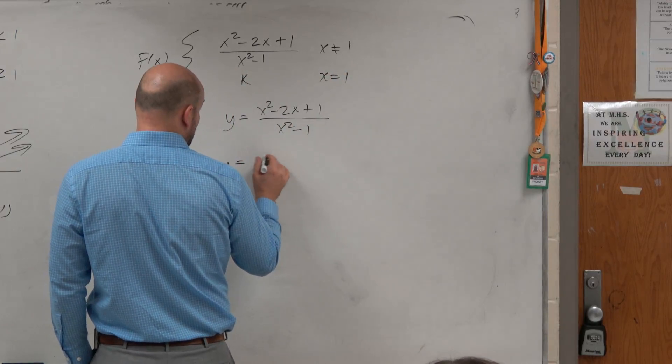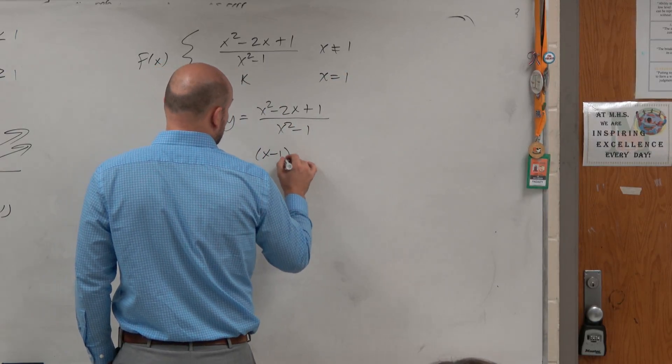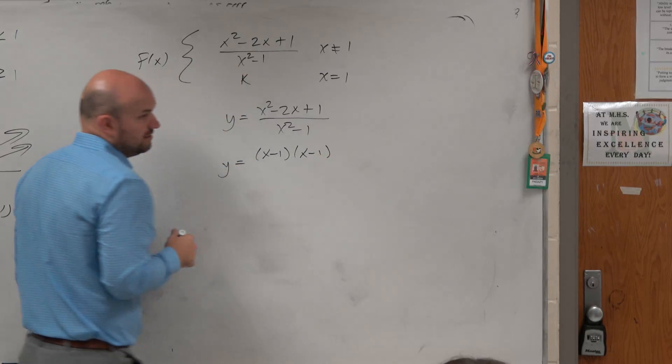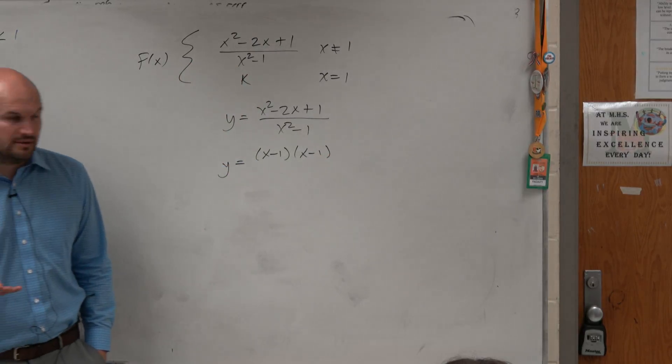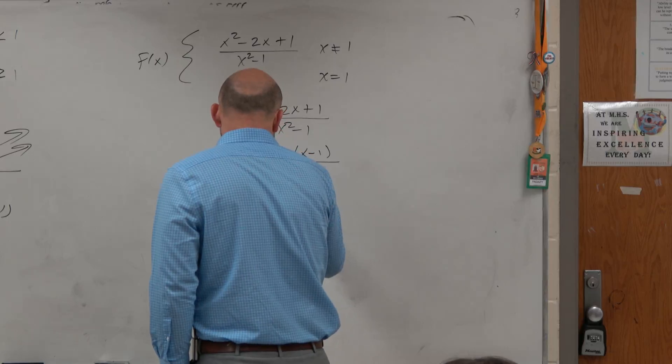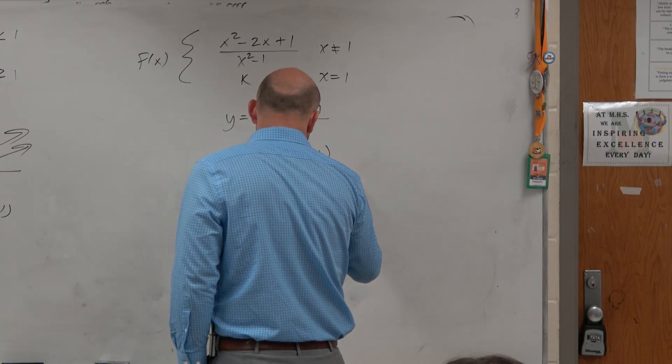So we know that we can factor the numerator into x minus 1 times x minus 1, which is really x minus 1 squared. And then we can factor the denominator into x minus 1 times x plus 1.